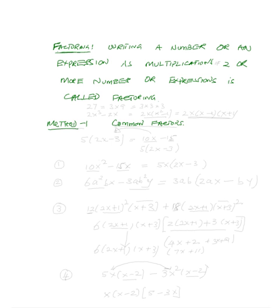Factoring means writing a number or an expression as a multiplication of two or more numbers or expressions. For example, if I have twenty-seven, we could write this as three times nine, or even as three times three times three. So you could write it as a multiplication of two factors or even three factors.